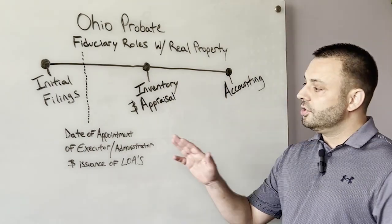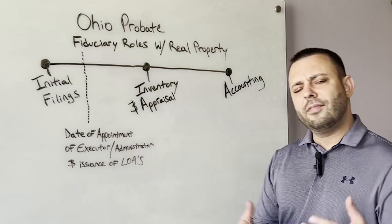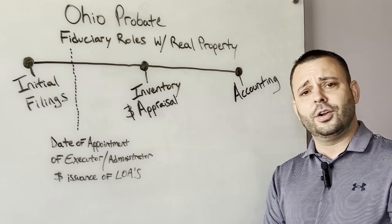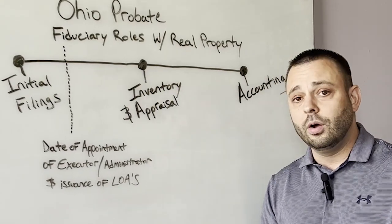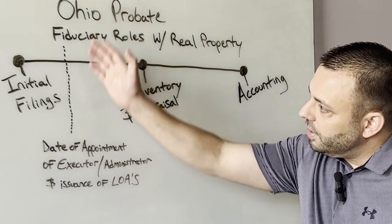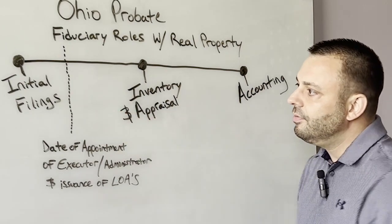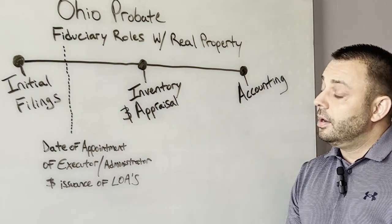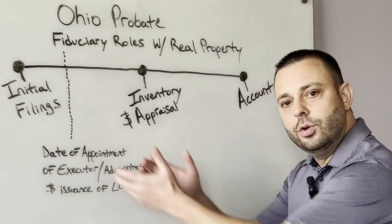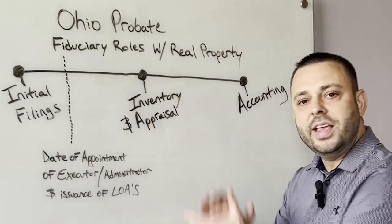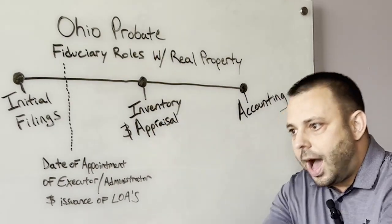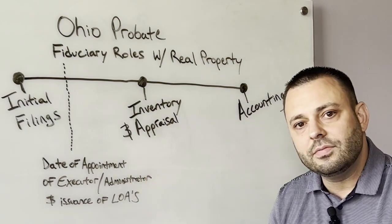Just as a reminder from my other video, there are two different types of fiduciaries and they have a range of different names or titles, but they're really the same thing — administrator or executor — depending on whether we're talking about an estate that has a will or doesn't have a will. The fiduciary is appointed fairly early on in the process after the initial filing stage, and a bond is sometimes required, which is an insurance policy that protects assets of the estate from misuse or waste by the fiduciary.